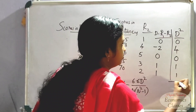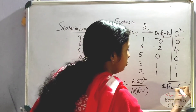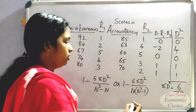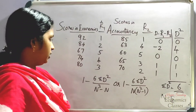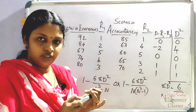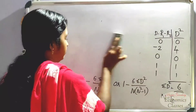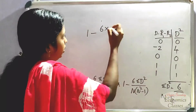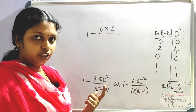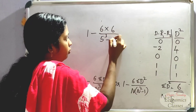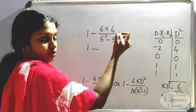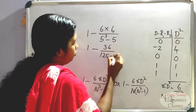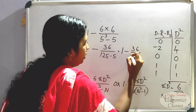Sigma d-squared equals 6. n is the number of items, which is 5. Now let's substitute into the equation: r = 1 minus 6 times 6 (sigma d-squared is 6), divided by n-cubed (5 cubed = 125) minus 5. So, 1 minus 36 divided by 120.